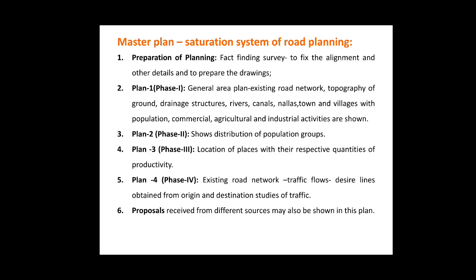The second step is Plan 1 or Phase 1, which includes the general area plan with the existing road networks, the topography of the ground, the drainage structures available, then the rivers, the canals, the nalas crossing the roads, the towns and villages with their population, the commercial aspect of the road, then the agricultural and the industrial activities. They are shown in this step 2 in the preparation of the Phase 1 drawings.